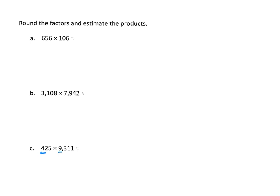So I'm going to round my 425 first. Is this closer to 400 or 500? I look next door at that 2 and that tells me I'm closer to 400. For my second number, 9,311. Is that closer to 9,000 or 10,000? That's definitely closer to 9,000 because my next door neighbor is a 3.